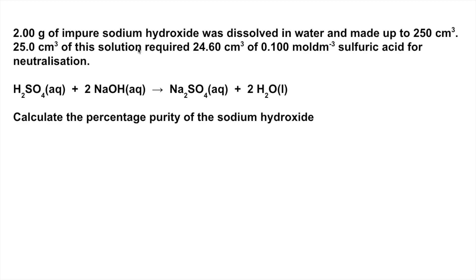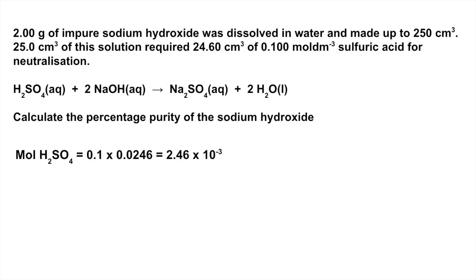The first thing I'm going to do is work out how many moles of sulfuric acid were used in the titration in that 25 cm³. That's concentration times volume, and remember the volume has to be in dm³, so we divide the cm³ by 1000. That gives 2.46 × 10⁻³ moles.